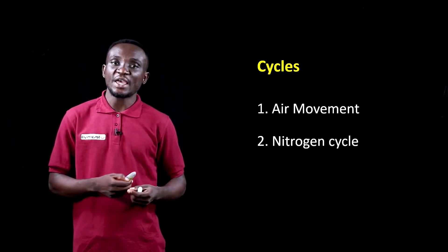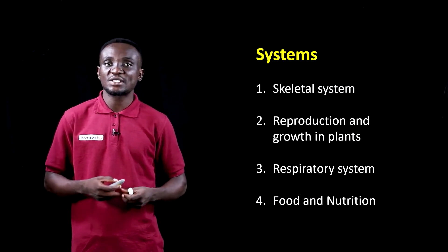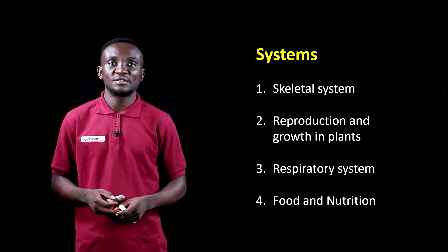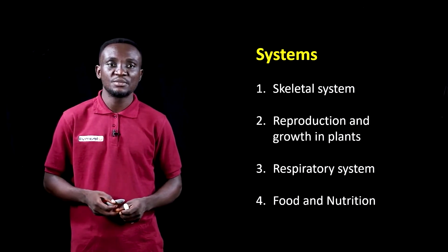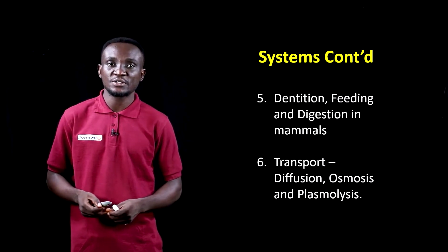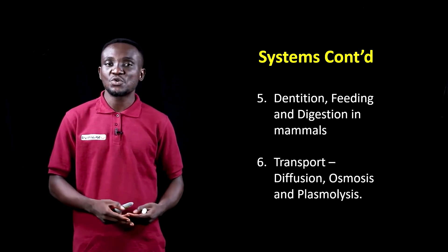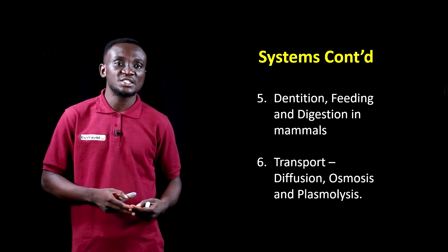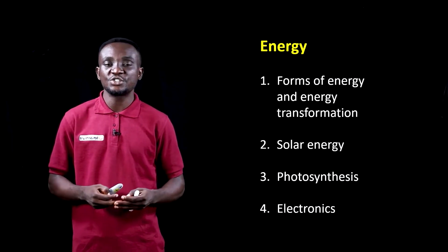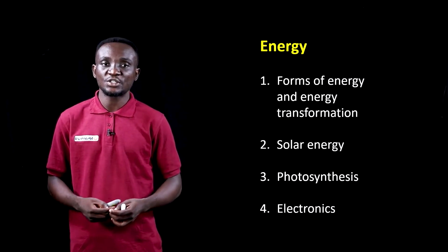In Cycles, we look at air movement and the nitrogen cycle. In Systems, we look at the skeletal system, reproduction and growth in plants, the respiratory system, food and nutrition, dentition, feeding and digestion in mouths, and transport — which comprises diffusion, osmosis, active transport, and plasmolysis. In Energy, we look at forms of energy and energy transformation, solar energy, photosynthesis, and electronics.